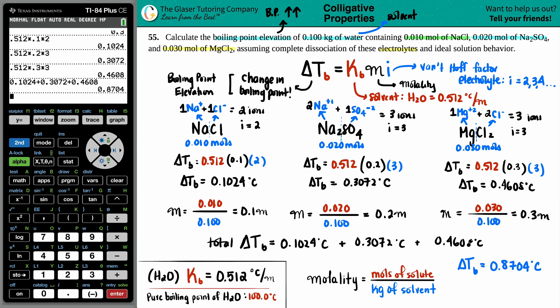The total boiling point elevation is 0.8704°C — you won't even reach 101°C. If you wanted the actual boiling point it would be 100 plus this number, but since they just wanted the elevation, that change is the final answer. I hope this helped — thank you for watching, please subscribe, and I look forward to helping you with more questions.